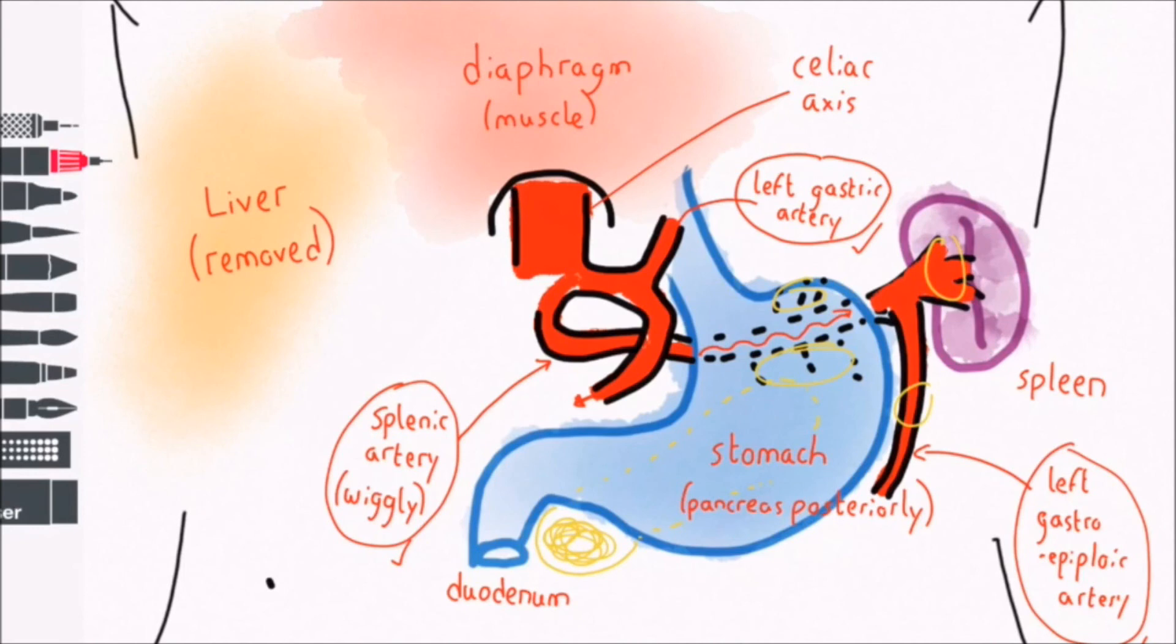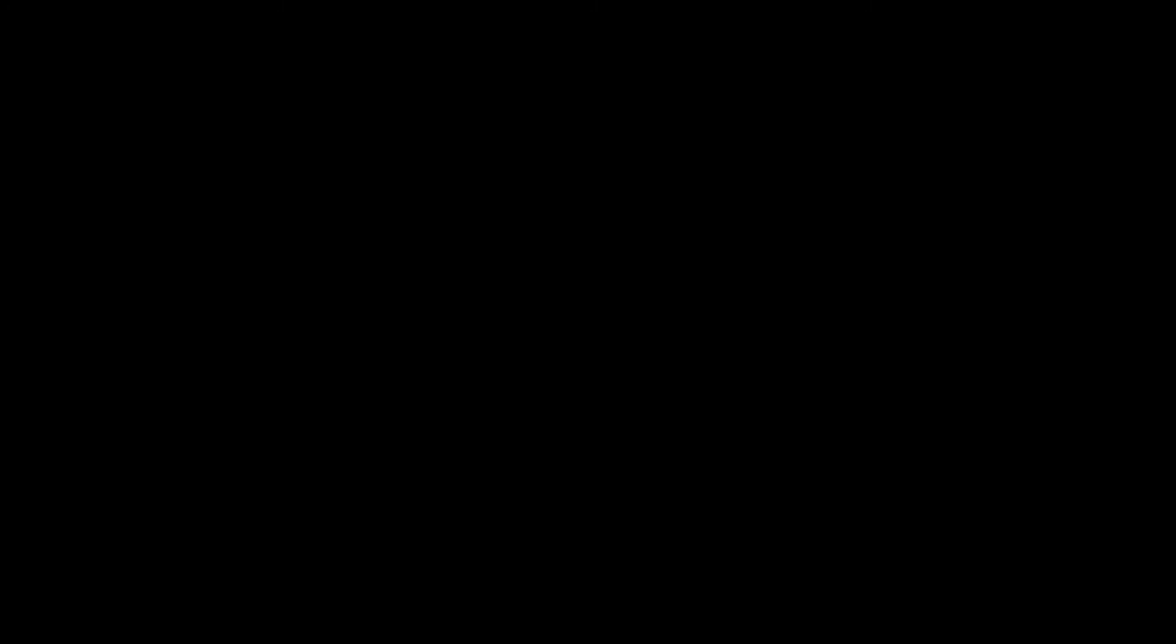Finally, the left gastric artery and the left gastroepiploic artery form anastomoses with their equivalents on the right to supply the lesser and greater curvatures of the stomach, respectively. Thank you.